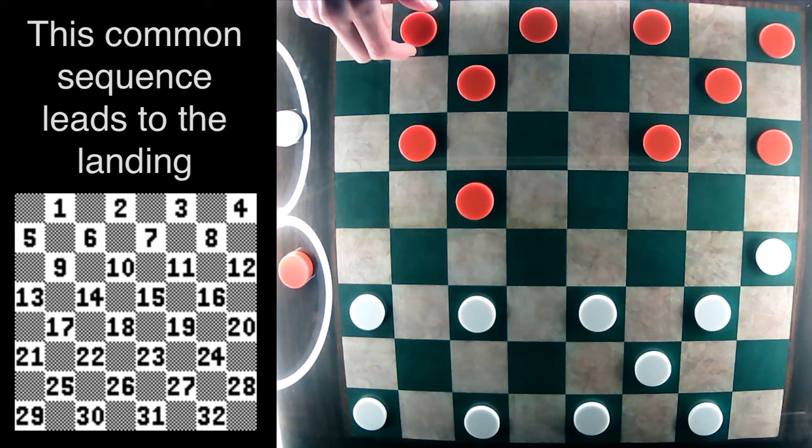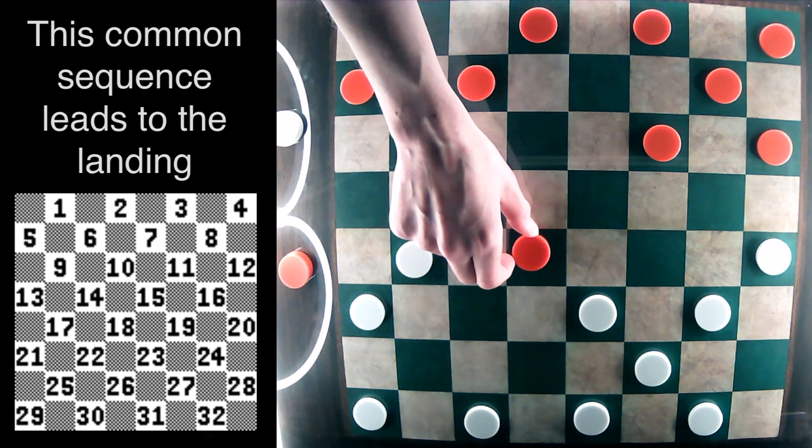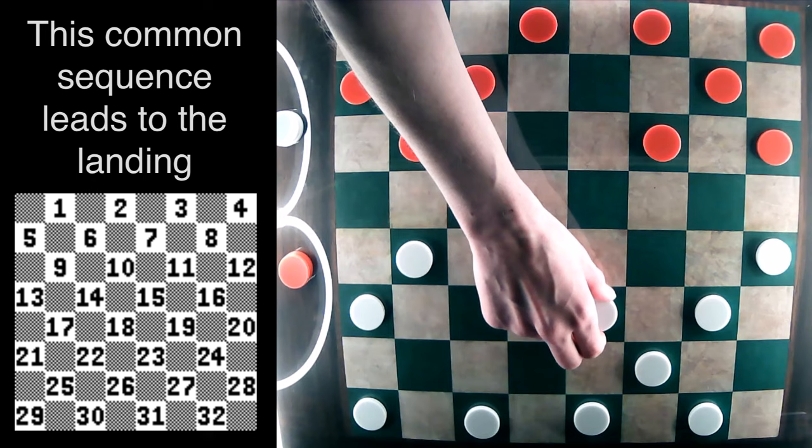Now white is going to play 25-22. Red is going to build a column with 1-5. White is going to continue to attack red's double corner, play 22-17.